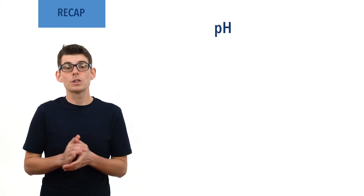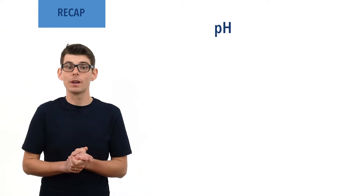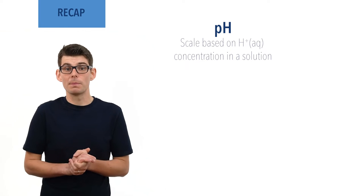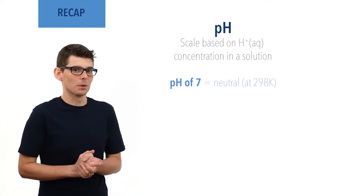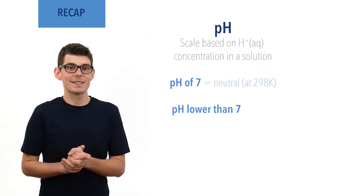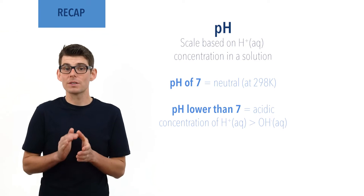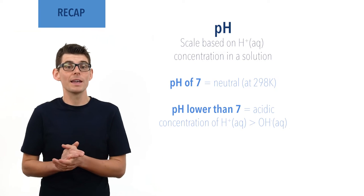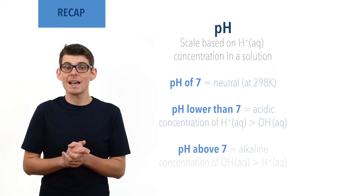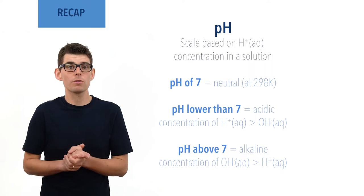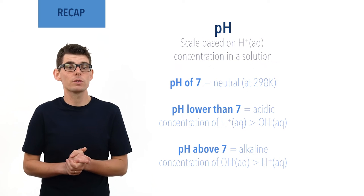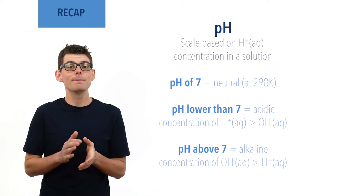pH is a scale used to represent how acidic or alkaline a solution is, and is based on concentration of H⁺ ions. A solution with a pH of 7 is considered neutral at 298 Kelvin, and a solution with a pH lower than 7 is described as acidic. The lower the pH, the more acidic the solution, and the higher its concentration of H⁺ ions. A solution with a pH above 7 is considered alkaline, and there is a higher concentration of hydroxide ions than H⁺ ions. The higher the pH value, the higher the concentration of hydroxide ions, and the more alkaline it is.